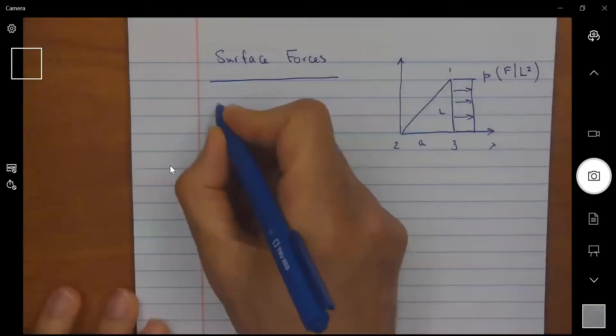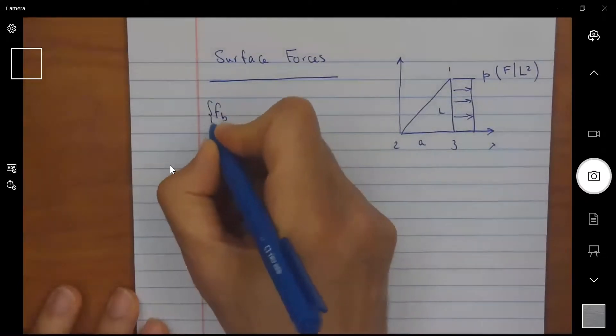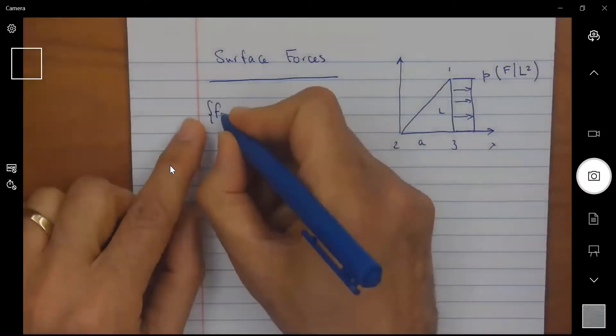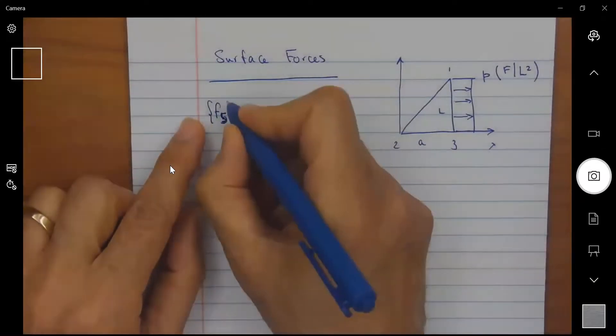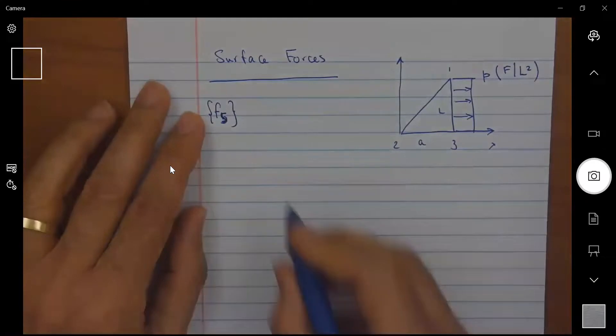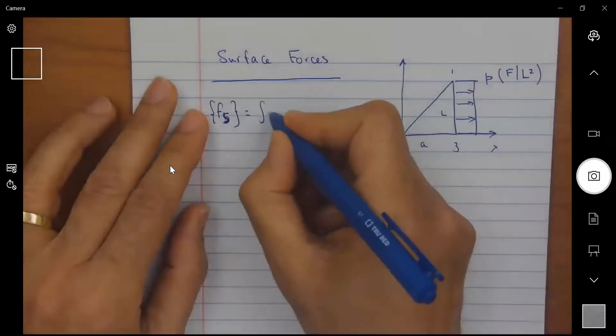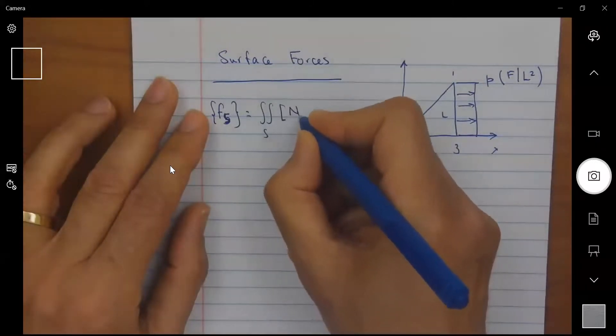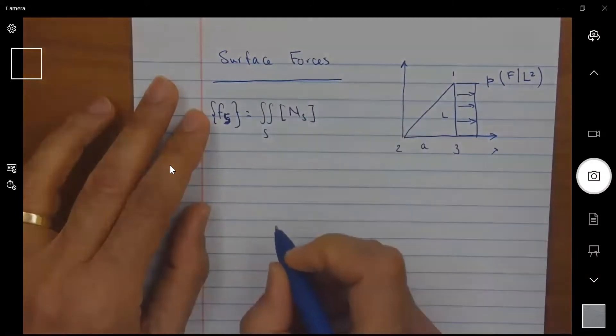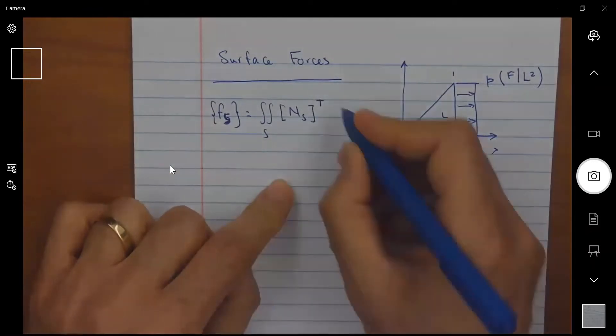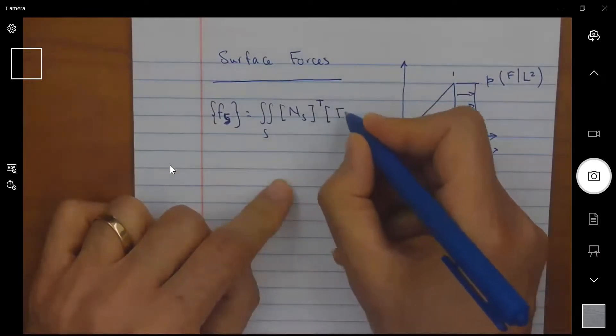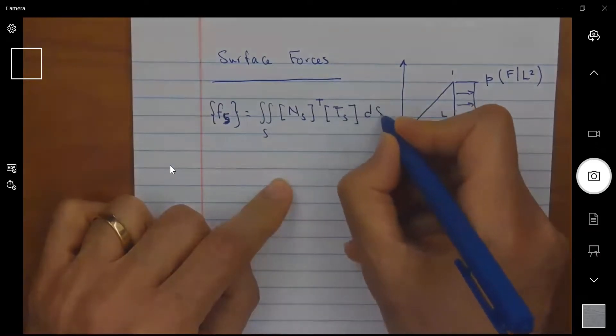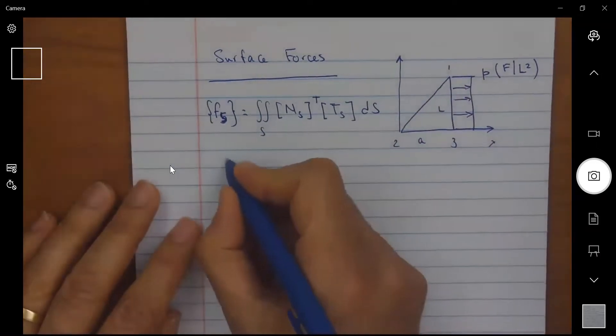Again, we can evaluate the equivalent nodal forces. Sorry, I'm going to call it F sub S for the surface force of traction equal to the double integral over the surface of the shape functions evaluated at the surface. That's why I call it an S transpose multiplied by the traction force on that surface T S, D S.